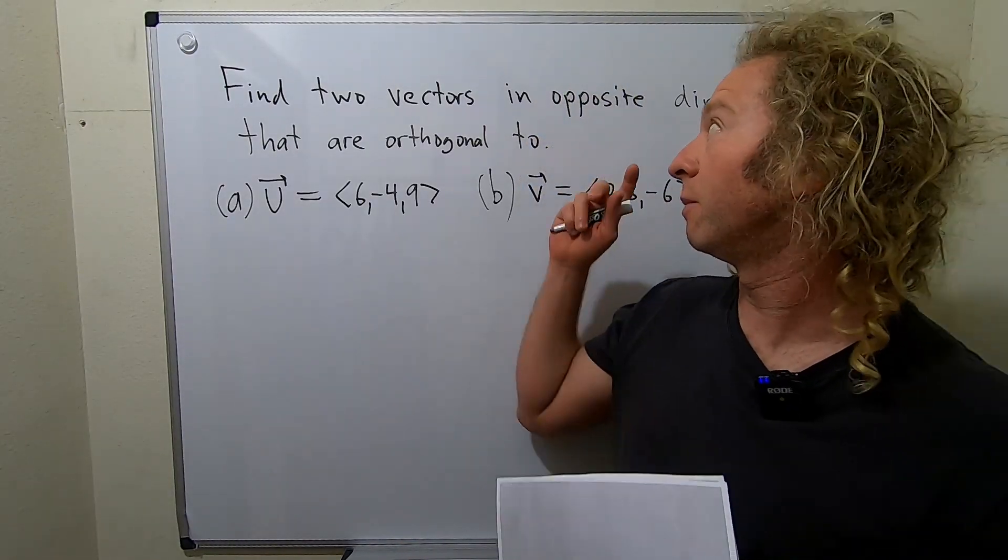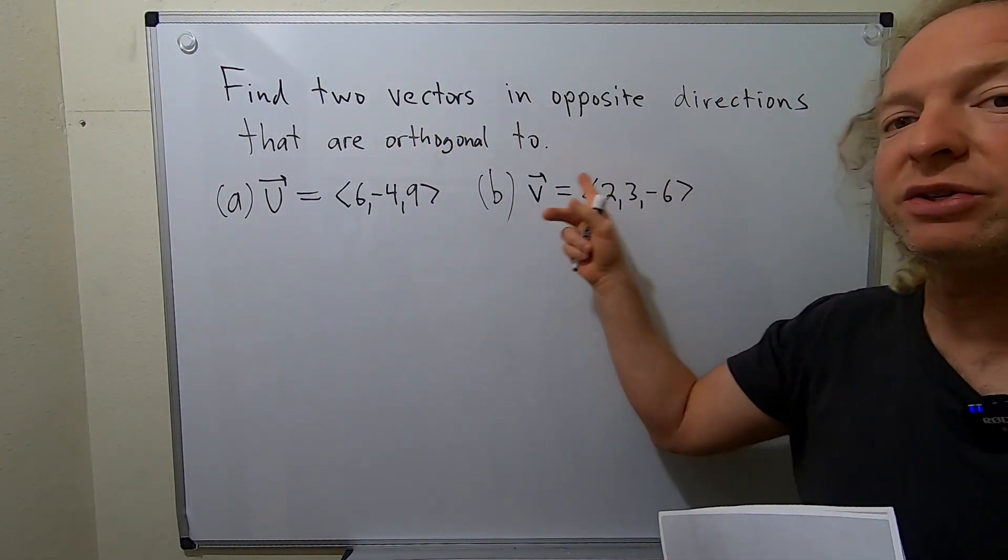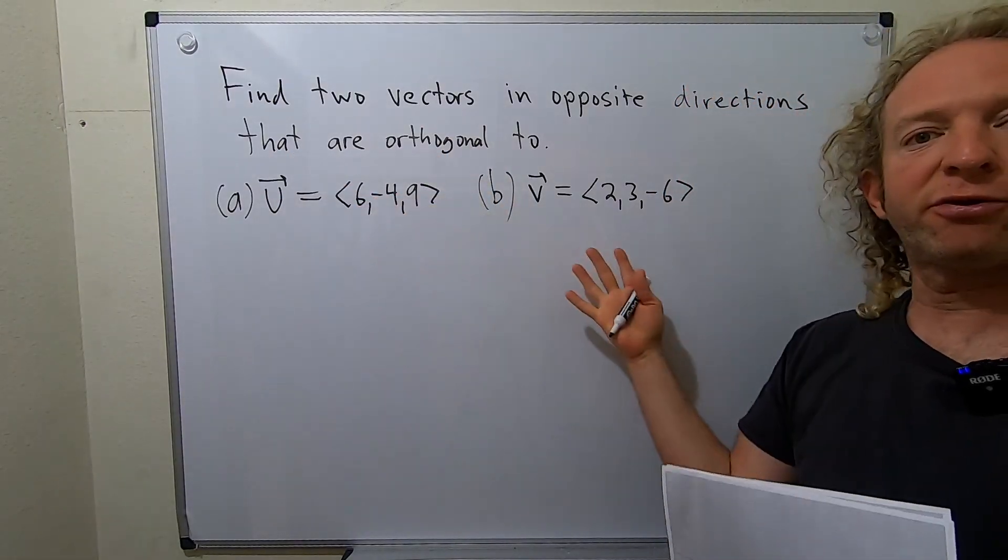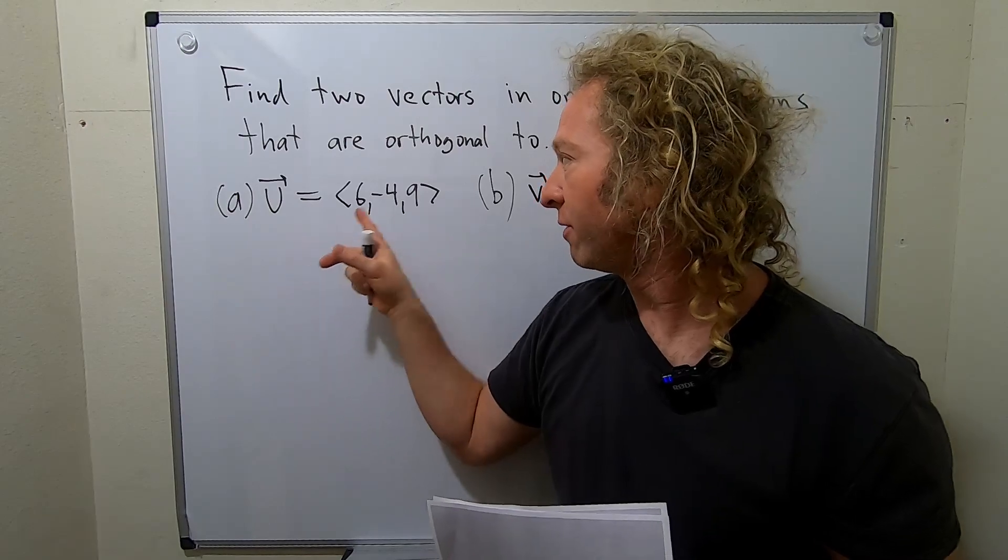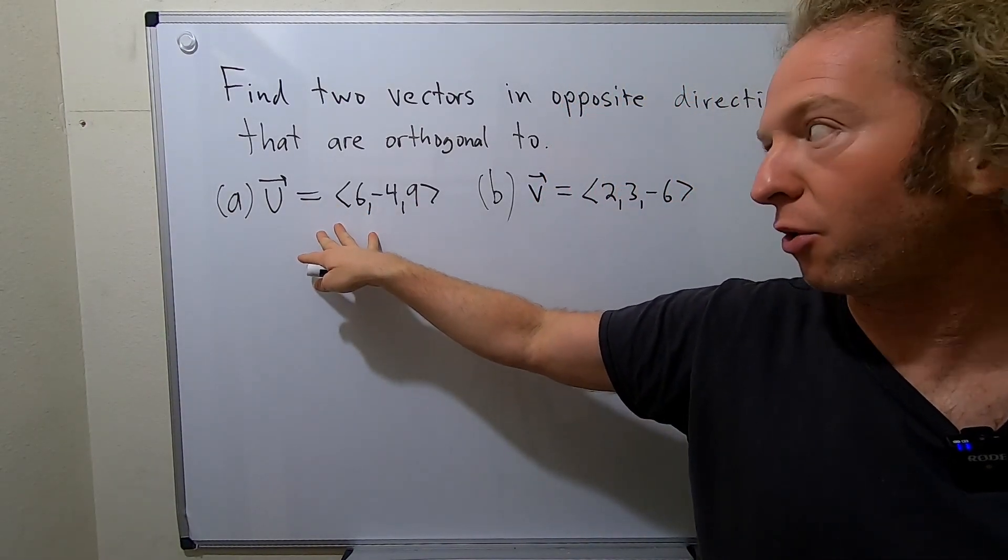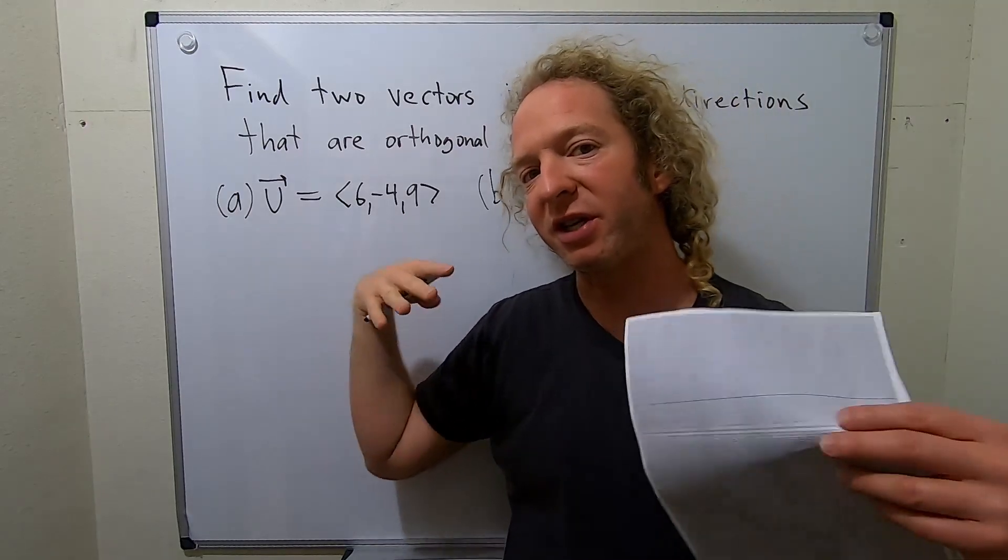What's up everyone? So in this video we're going to find two vectors in opposite directions that are orthogonal to both of these vectors. So first we'll do this one. So we need a vector that is orthogonal to this. So when we dot it with this we have to get zero.